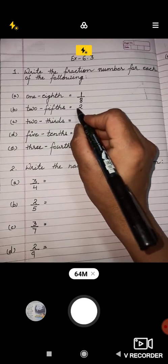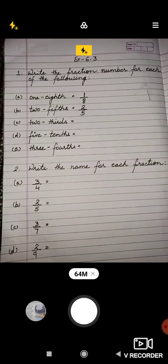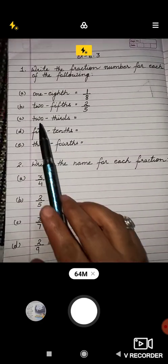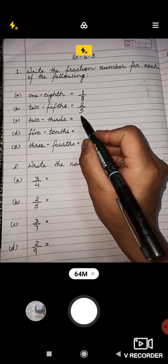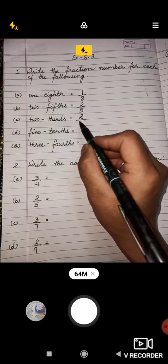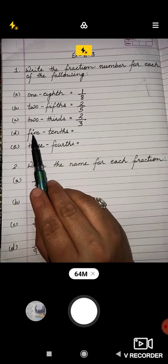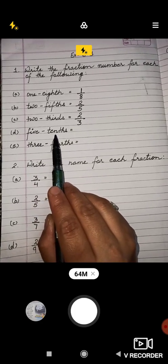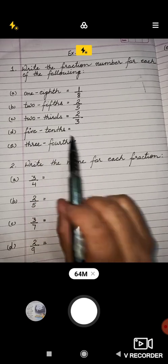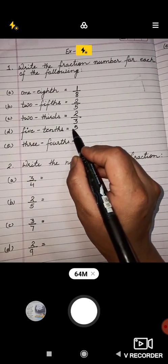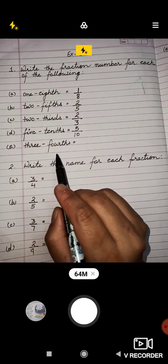Then two-thirds, so that means two is numerator and denominator is three. The first name is numerator and the second name is denominator. So five-tenths means five upon ten, three-fourths means three upon four. So you converted the names into fractions.